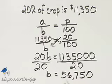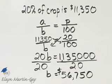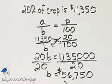What does that stand for? That is a dollar amount, and it does stand for the potential crop value. How can you check? Find 20% of this amount. It should be the 11,350.